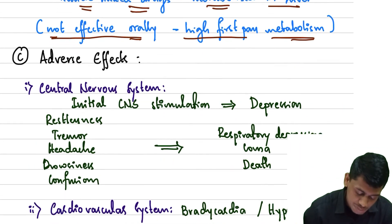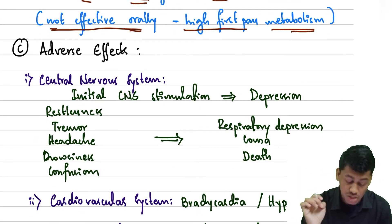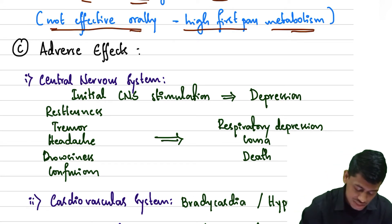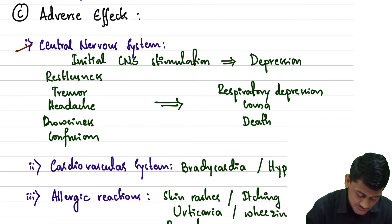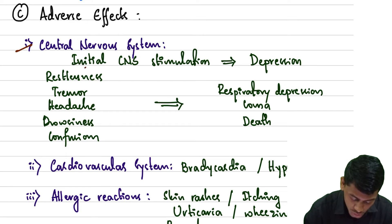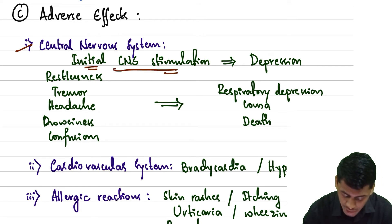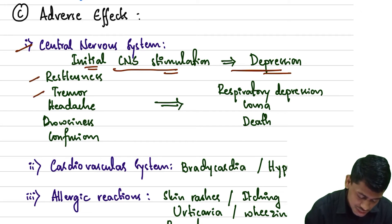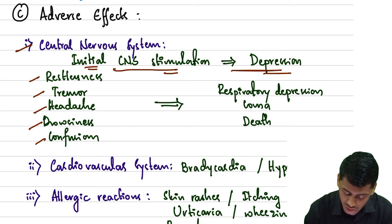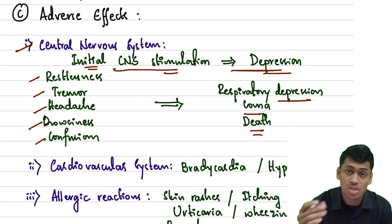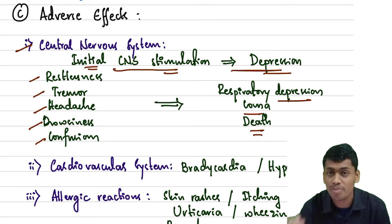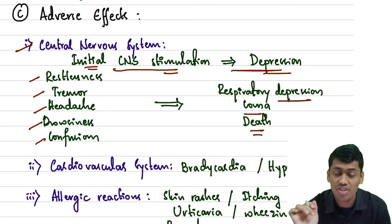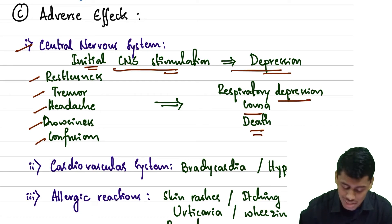Moving on to the adverse effects of local anesthetics. CNS adverse effects: there is initial CNS stimulation followed by depression. Initially they cause restlessness, tremor, headache, drowsiness, and confusion. Later, in high doses, they cause respiratory depression, coma, and death.